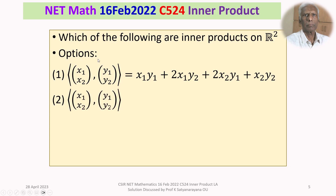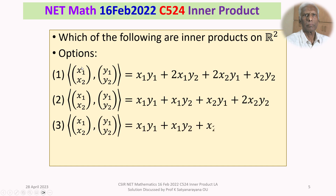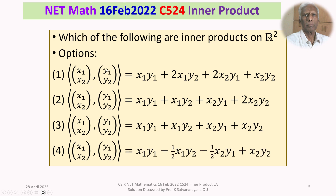We are given four options. Option 1: the bracket of (x1, x2) comma (y1, y2) is equal to x1·y1 plus 2 times x1·y2 plus 2 times x2·y1 plus x2·y2. We do not read this as the inner product of (x1, x2) with (y1, y2) unless it satisfies those four properties of the inner product.